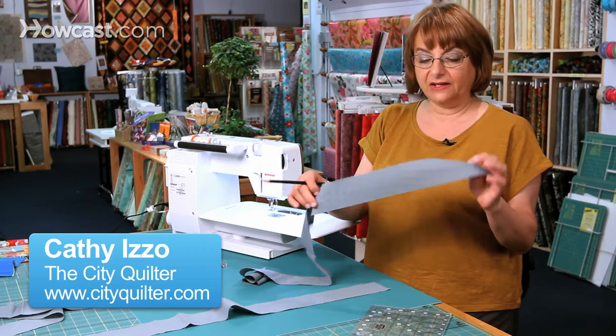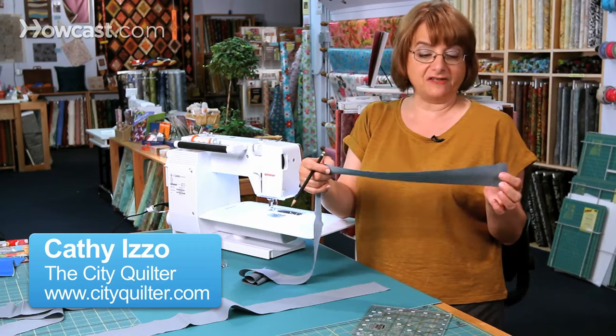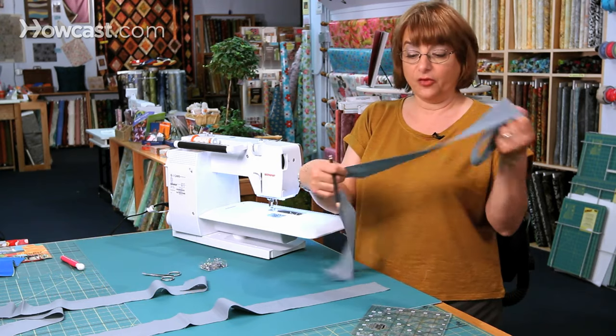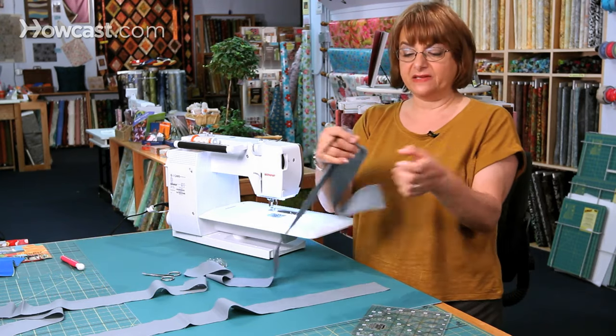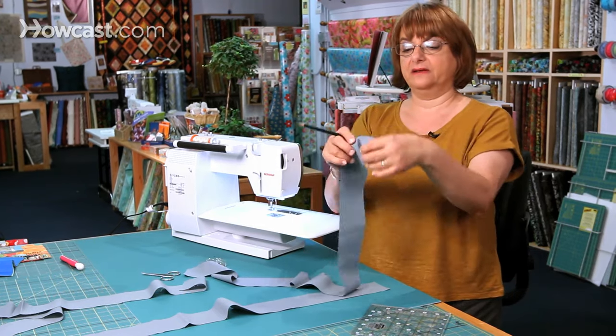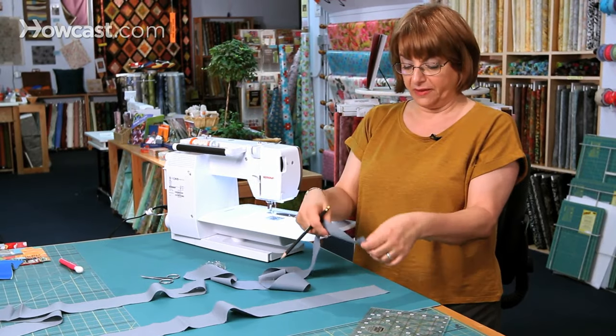When I make continuous binding, I usually cut my strips 2 1⁄2 inches wide by the width of the fabric. It's a nice size. You don't have to play with it a lot.